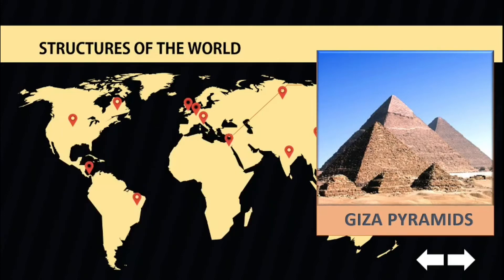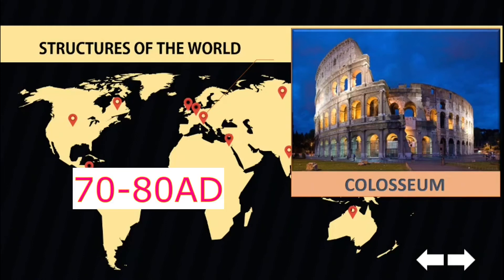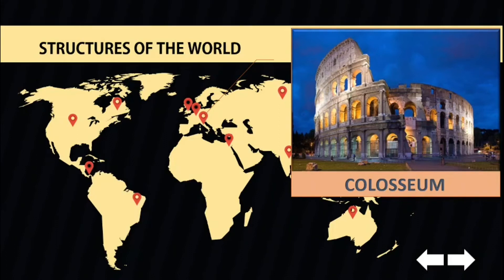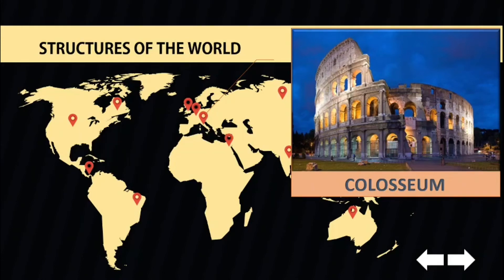Now let's proceed to our second destination, the Colosseum. One of the greatest achievements of ancient Romans is the creation of the Colosseum, also known as the largest Roman amphitheater ever built. It was built in 70 AD and was finished in 80 AD. It was capable of seating 50,000 people and was usually used for gladiatorial games, but also for public spectacles, mock sea battles, animal hunts, executions, reenactments of battles, and dramas based on classical mythology.